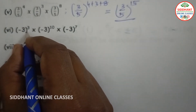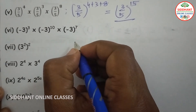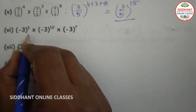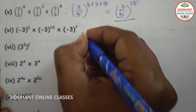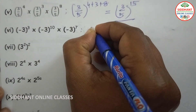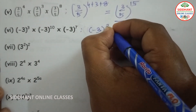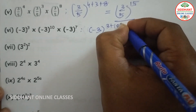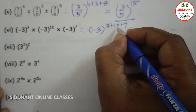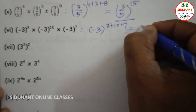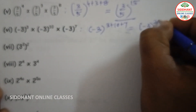Sixth one: (-3) to the power of 3 into (-3) to the power of 10 into (-3) to the power of 7. Bases are same, so we add the powers: (-3) to the power of 3 plus 10 plus 7, which gives (-3) to the power of 20.